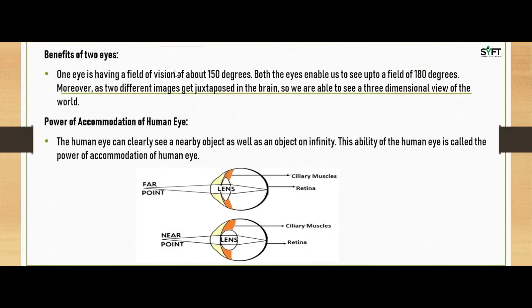Let us discuss the benefits of having two eyes. One eye has a field of vision of about 150 degrees, but both eyes together enable us to see up to a field of 180 degrees. Moreover, as two different images get juxtaposed in the brain, we are able to see a three-dimensional view of the world.